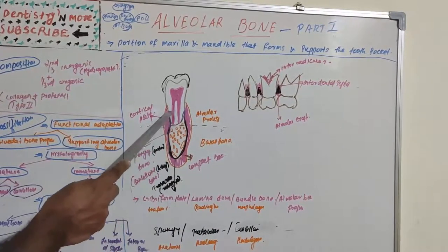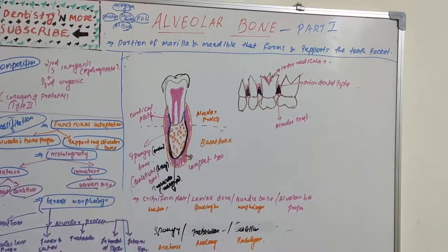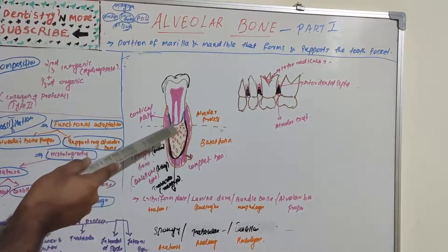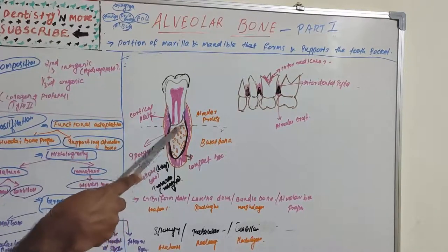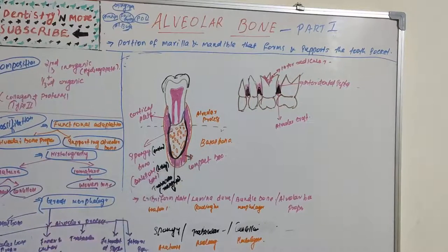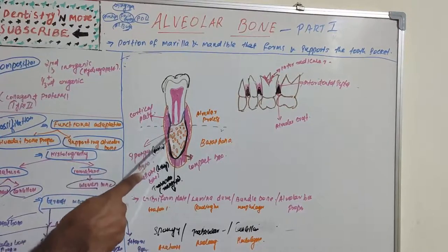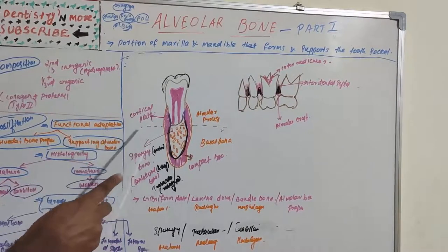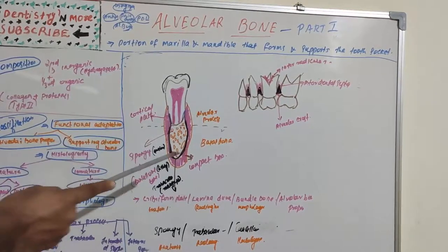Cortical bone, also known as compact bone, makes up around 85% while spongy bone is 15%. Cortical bone has less turnover than spongy bone; remodeling is around 3% in cortical bone versus 25% in spongy bone. Spongy bone is mainly of metabolic function, while cortical bone has a mechanical and protective role. The layer of compact bone or cortical plate is known as alveolar bone, and inside this is spongy bone. This is the alveolar process; the lower part is basal bone.